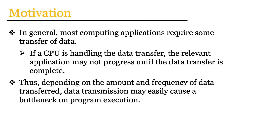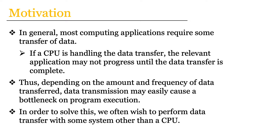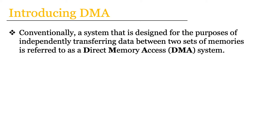In order to solve this, we want to perform data transfer with some system other than a CPU. The most common solution is one that utilizes what is known as a direct memory access or DMA system. Conventionally, I'm going to define a direct memory access or DMA system as one that is designed for the purposes of independently transferring data between two sets of memories.